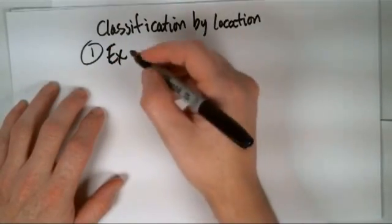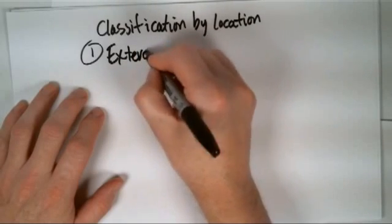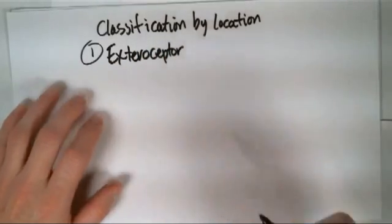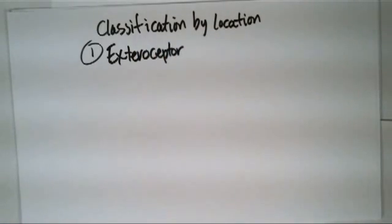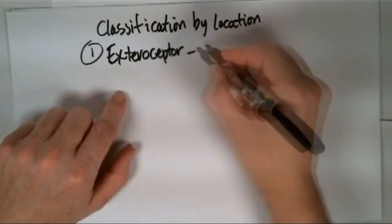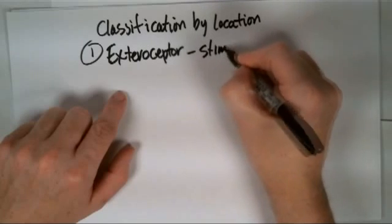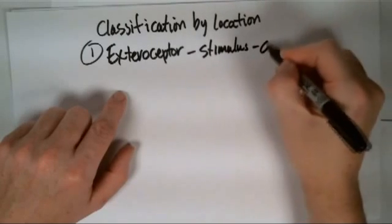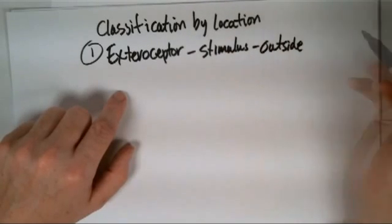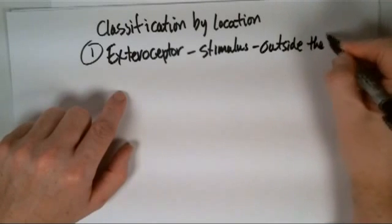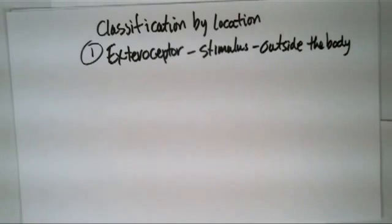So the first of this is going to be an exteroceptor. And this one's classified, they are sensitive to stimulus from outside the body. Okay, so the stimulus comes outside the body.